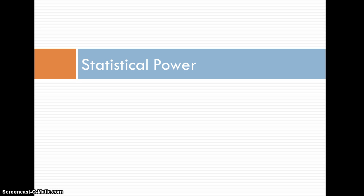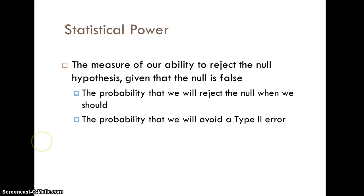This video introduces you to issues related to statistical power and how that fits in with hypothesis testing. Statistical power has to do with the ability to reject the null hypothesis. It gives us some sense of how likely we are to be able to reject the null hypothesis if the null hypothesis is false.